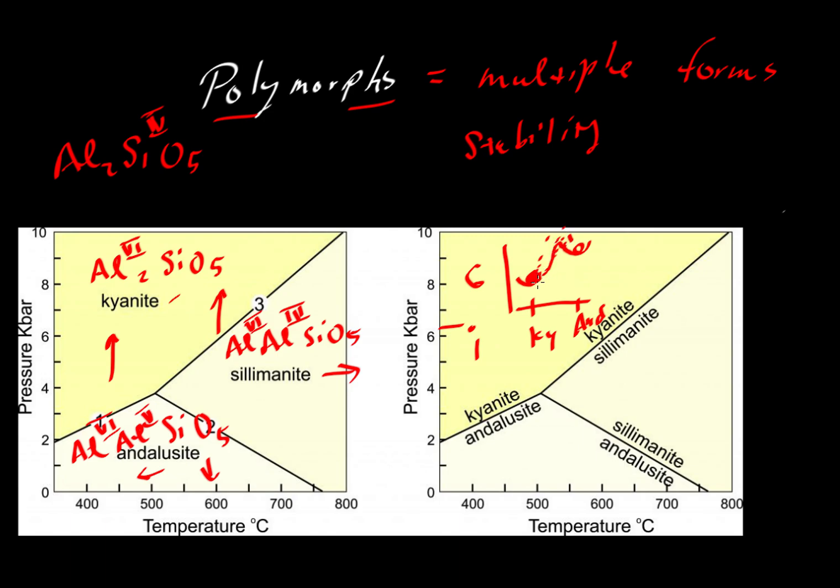We could play that game for all of these panels, comparing the minerals in any order we like. But basically, the bottom line is that if we're in this field, sillimanite has the lowest Gibbs free energy. In this yellow field, kyanite has the lowest Gibbs free energy. By the same token, in this field, andalusite has the lowest Gibbs free energy.